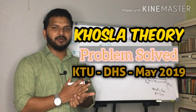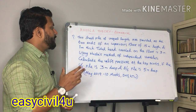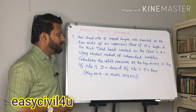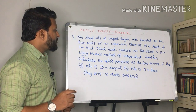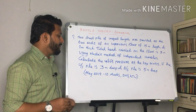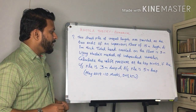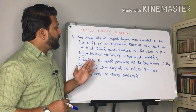Hi, welcome to Easy Civil. Today we are going to discuss a question that was asked for a DHS examination in May 2019 for ten marks. The question is: two sheet piles of unequal length are provided at the two ends of an impervious floor of 15 meter length and 1 meter thick. Total head created on the floor is 3 meter. Using Khosla's method of independent variables, calculate the uplift pressure at the key points. The upstream pile is 3 meter deep and downstream pile is 5 meter deep.